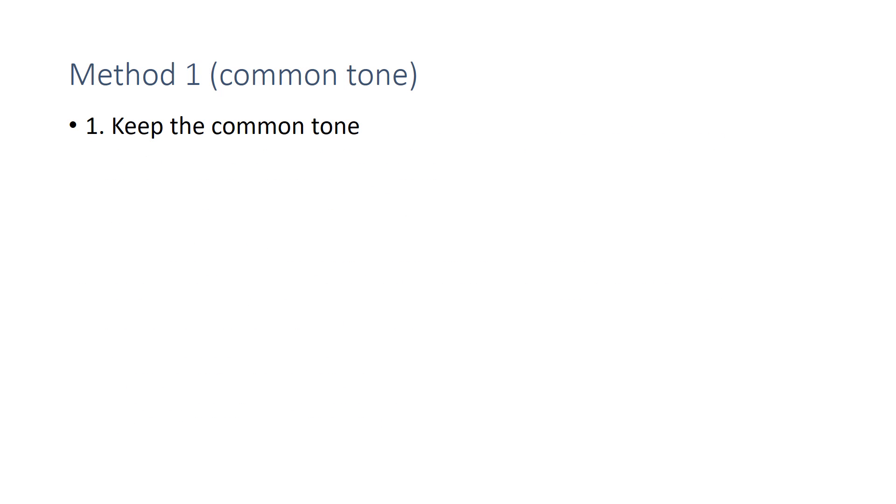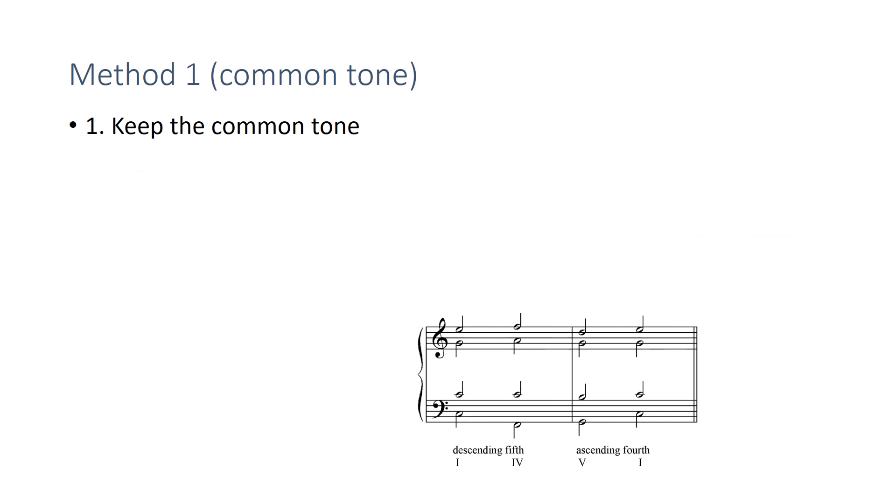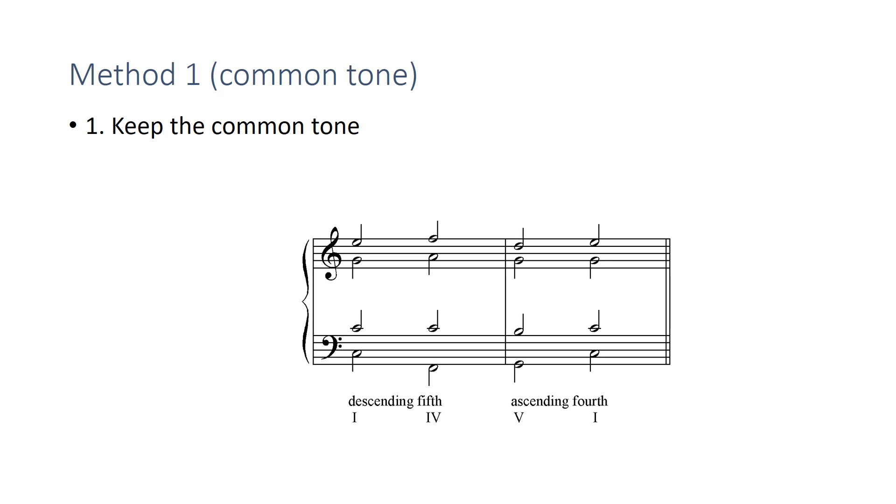First of all, the common tone method. What you're going to do is find a common tone and keep it. So as I move from a C chord to a root that's a fourth, a descending fifth away, a fifth away, I go from CEG to FAC, the common tone is C, right?